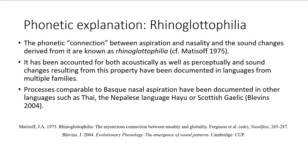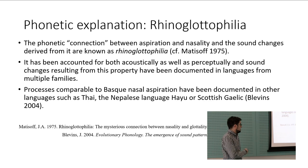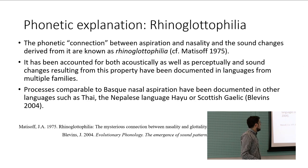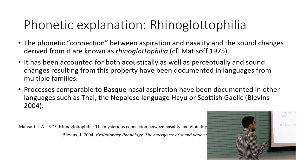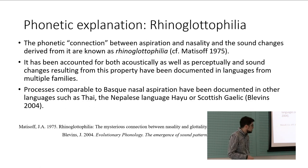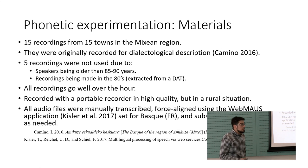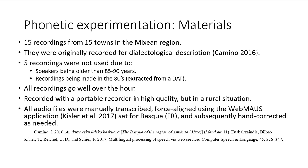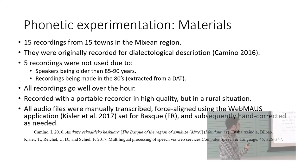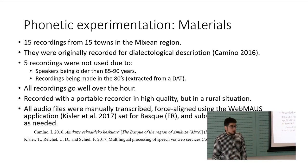Rhinoglottophilia is the phonetic connection between aspiration and nasality, and it has been accounted for acoustically as well as perceptually. It has been documented in many languages, including Thai, the Nepalese language Haju, and Scottish Gaelic, in addition to Basque. Moving on, we need to check phonetically what is actually happening here — we have described a rhinoglottophilia process, but we have to actually test that in the lab.